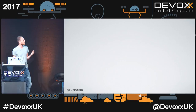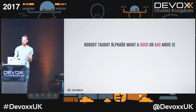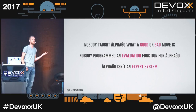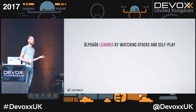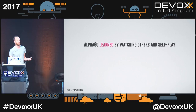What can we conclude? The surprising thing is nobody told AlphaGo what a good or bad move is — there's no Go logic in AlphaGo, nobody programmed an evaluation function. AlphaGo isn't an expert system; it's a general machine learning solution. AlphaGo learned by watching others and self-play. Nobody said 'this is how Go is supposed to be played.' It just watched games and played itself, and that's how it became so strong — using general machine learning techniques to figure out for itself how to win at Go.